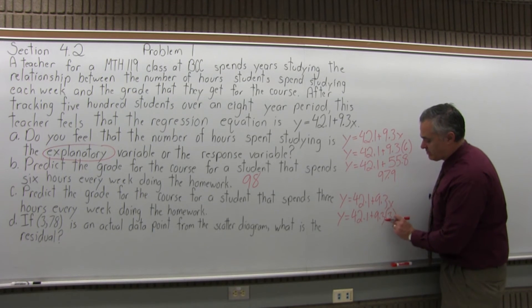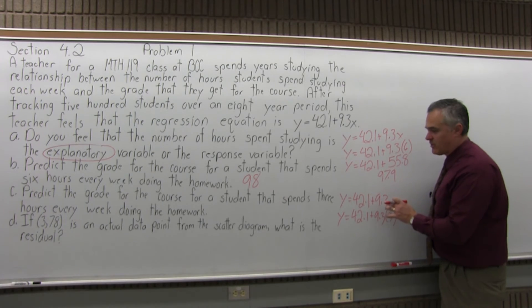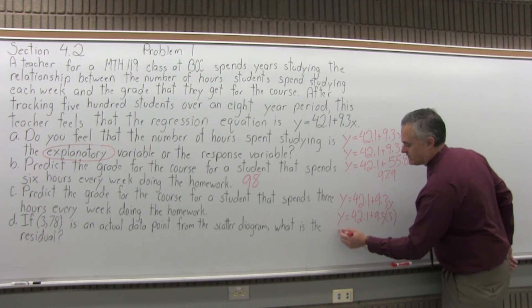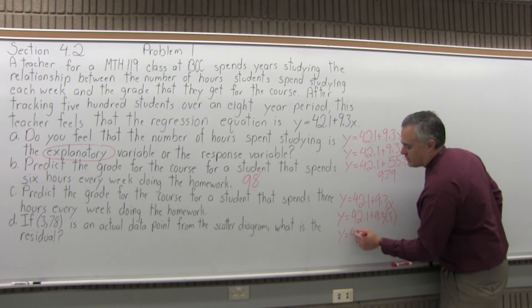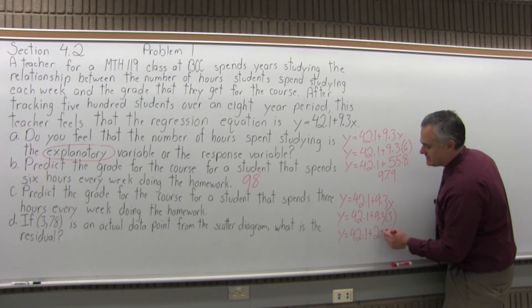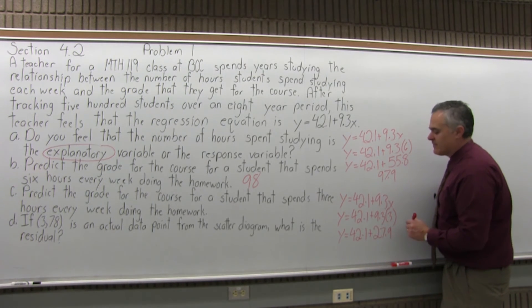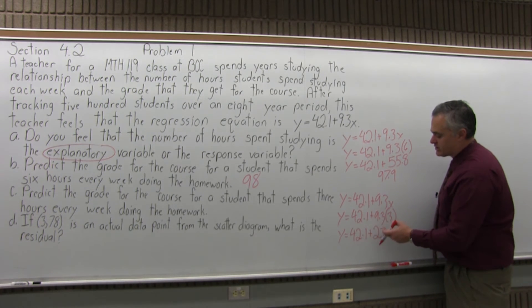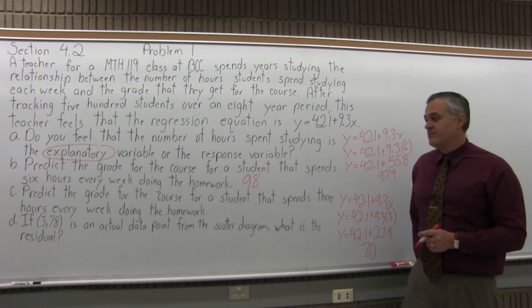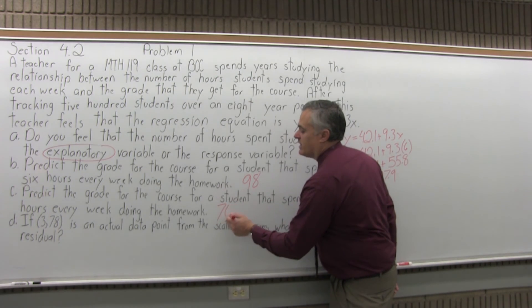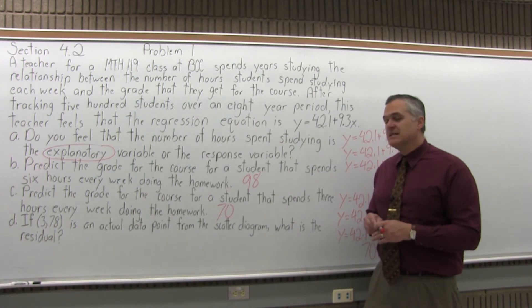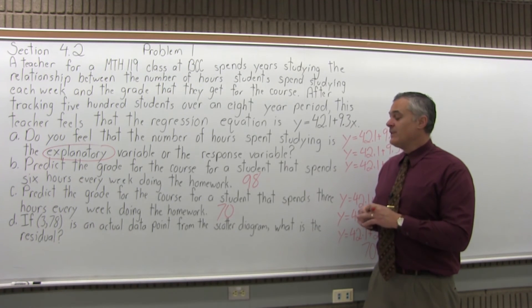Again, you have an addition and a multiply. You must do the multiply first. Of course, that's the rule for statistics, for trig, for geometry, for every type of math. You must multiply first. So Y equals 42.1 plus 9.3 times three is 27.9. And then if you add 42.1 plus 27.9, it comes out to a nice whole number of 70. So if a student is spending three hours a week on the homework, they can get a 70 or a low C. That would probably be a C-.